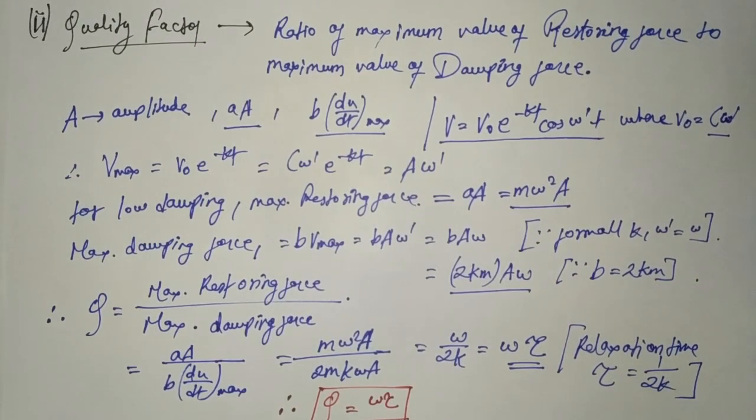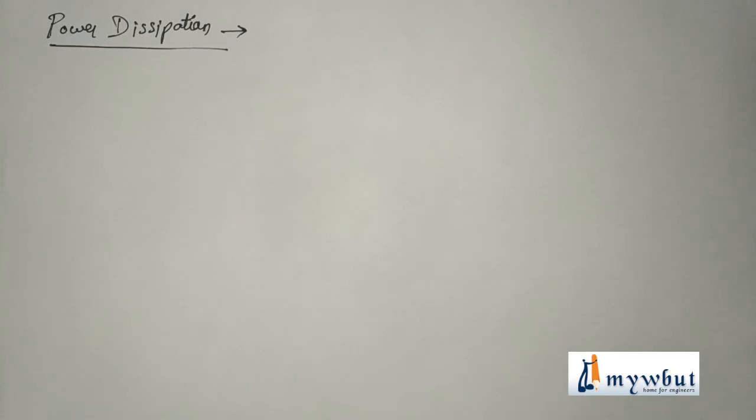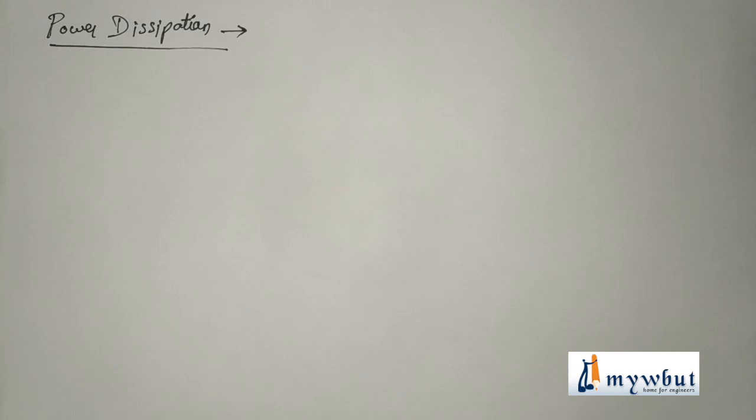So the quality factor Q equals omega tau — that is, the multiplication of the natural angular frequency into the relaxation time. We have now reached the end of the topic of damped vibration. The only topic remaining is power dissipation. When a particle vibrates, it has to do work against the damping force, so a certain fraction of energy is always dissipated in damped oscillatory motion.